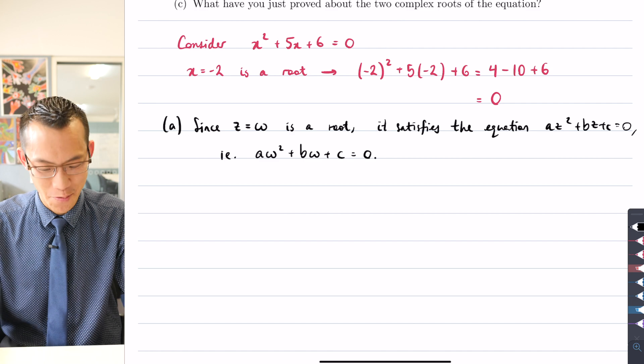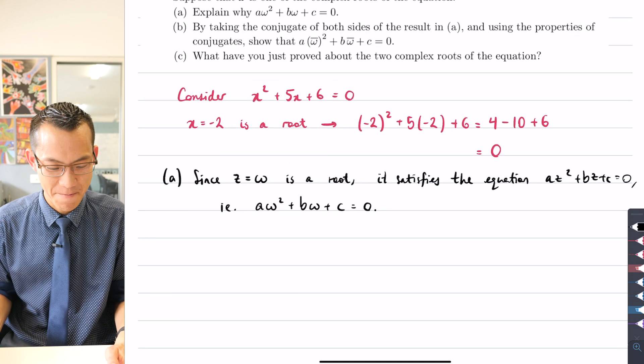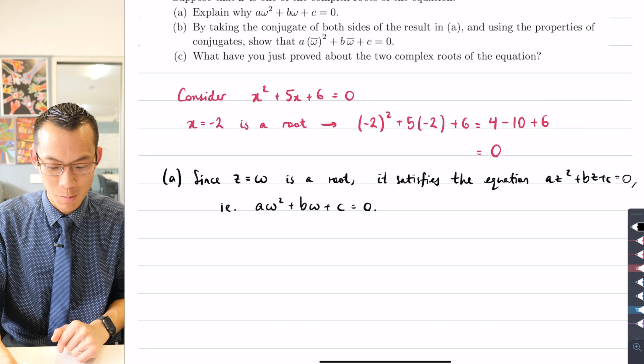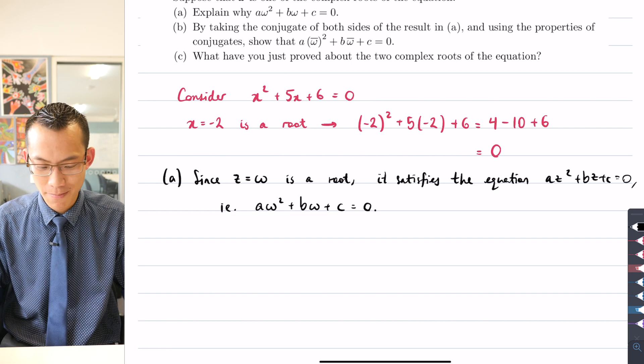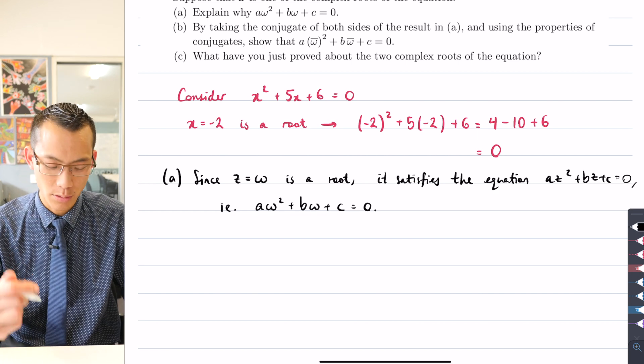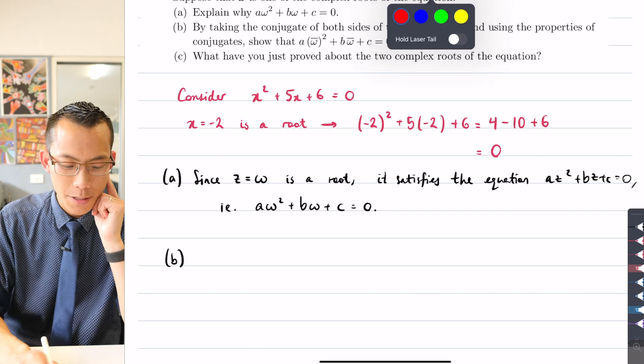I told you it wasn't much of a proof. That's the whole thing. So that's my explanation: it's a root, therefore it satisfies the equation. But how do we want to use this? Let's have a look at part (b) together.